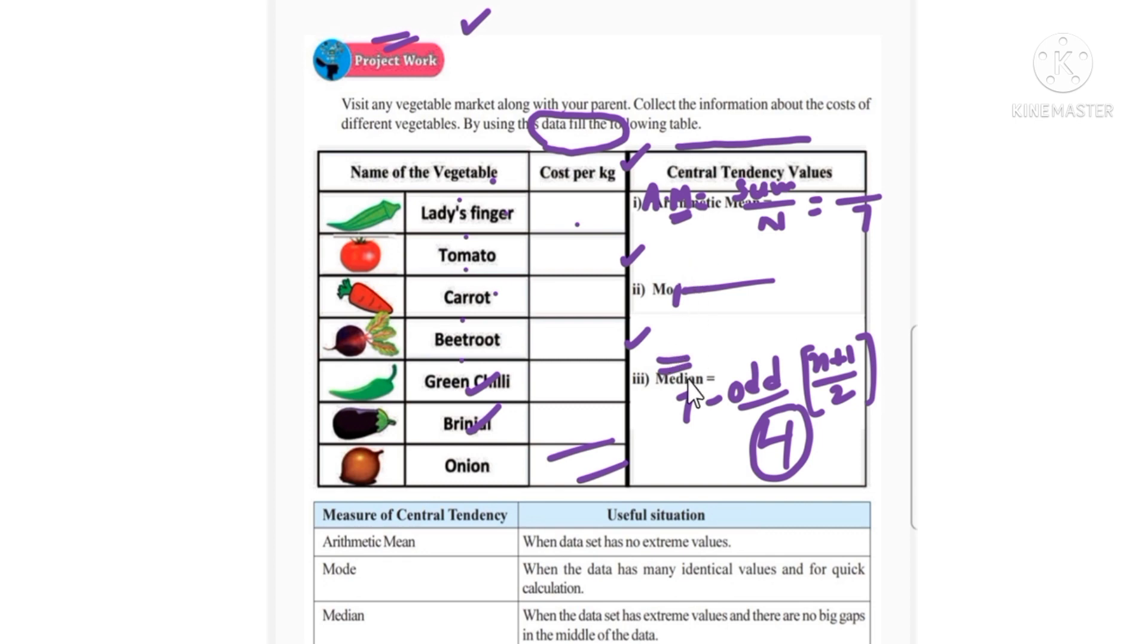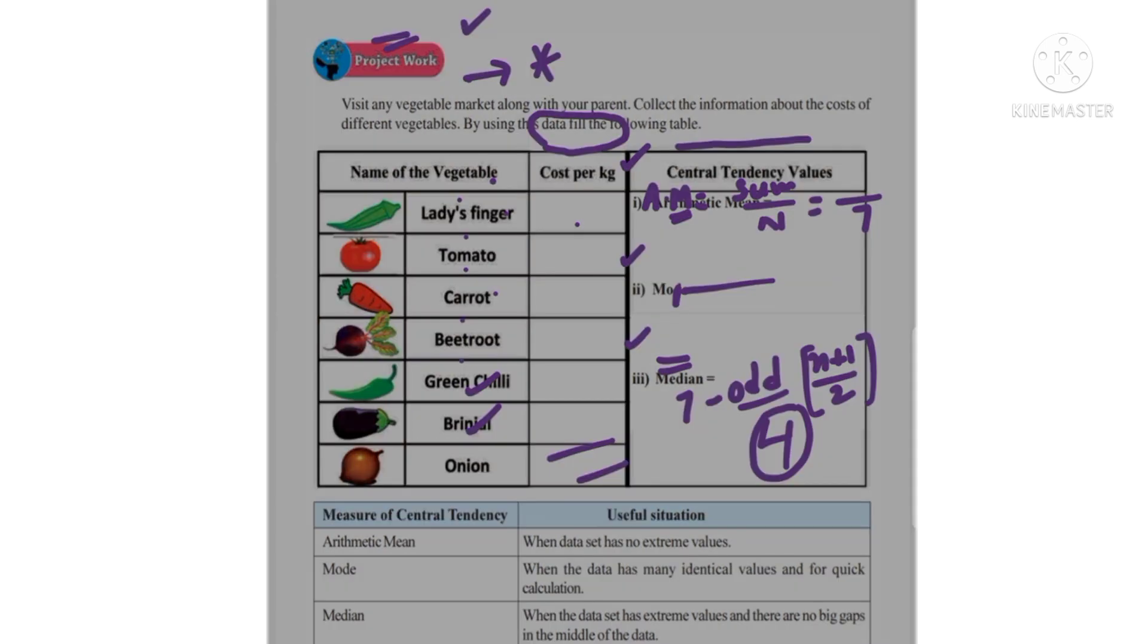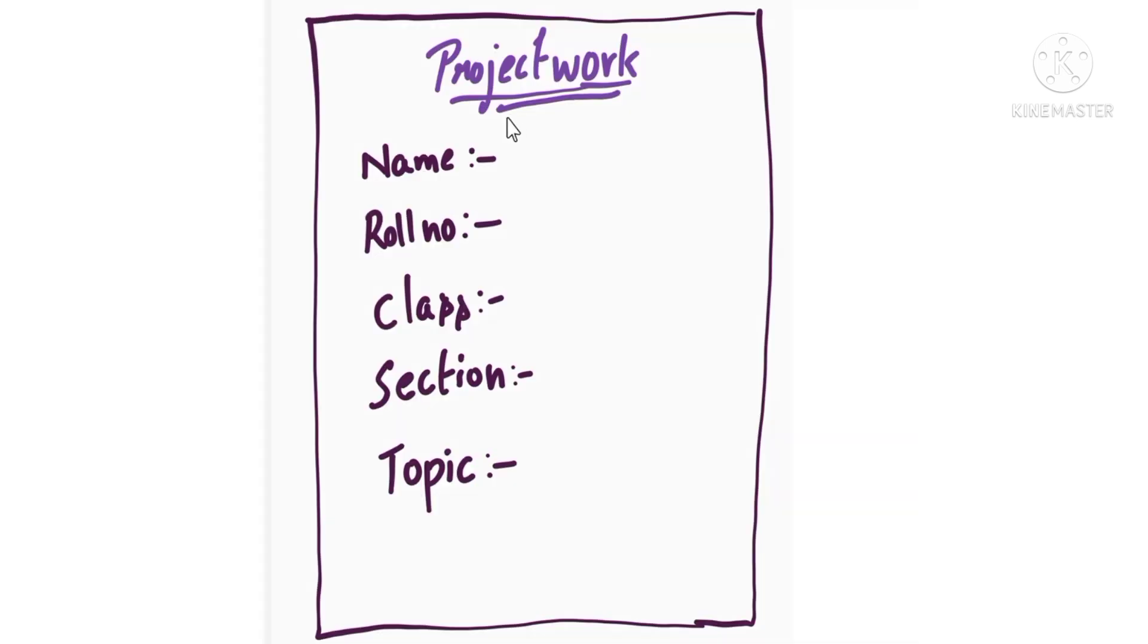So we will have arithmetic mean, mode, and median. These three values we fill in the first table form. This is a very interesting project work and should be done on best and neat A4 sheets. The representation is very important.